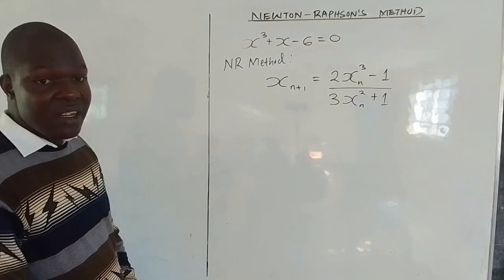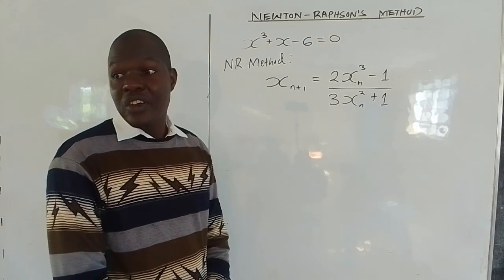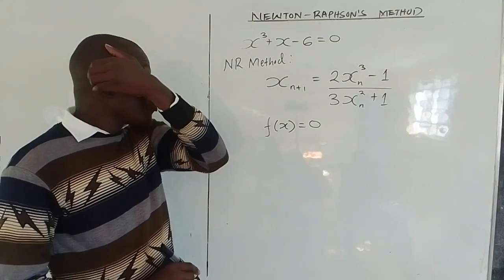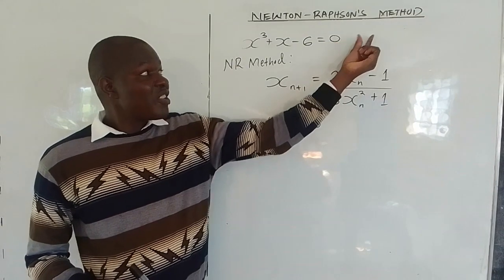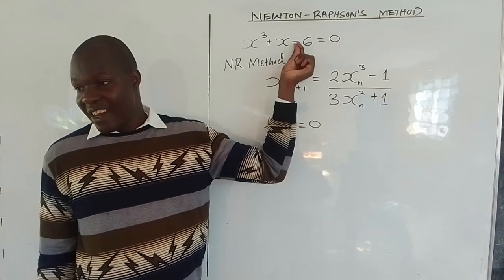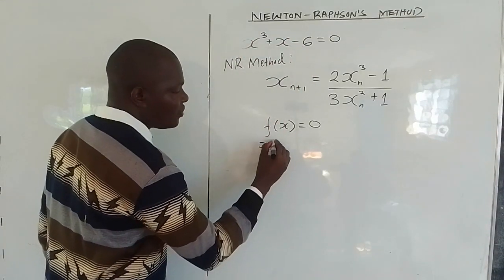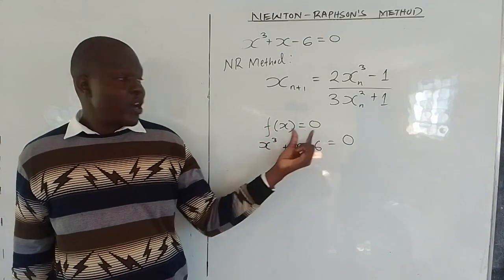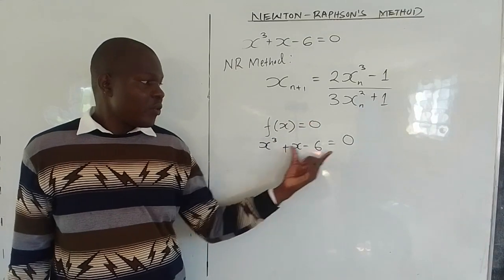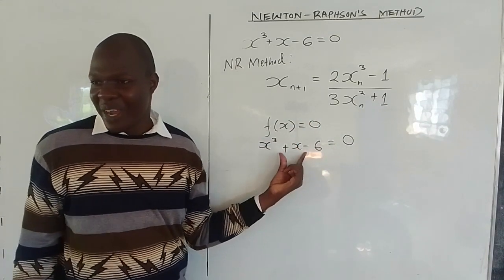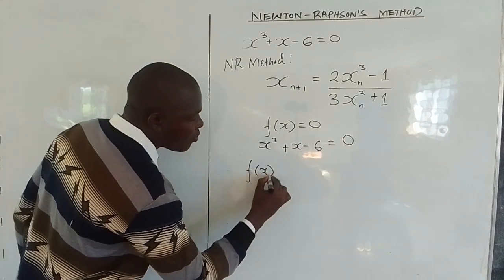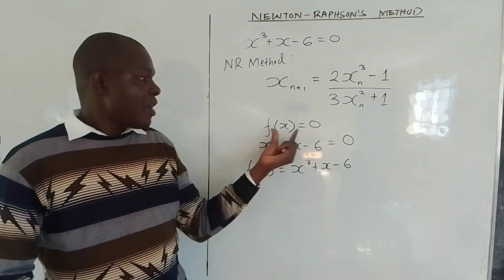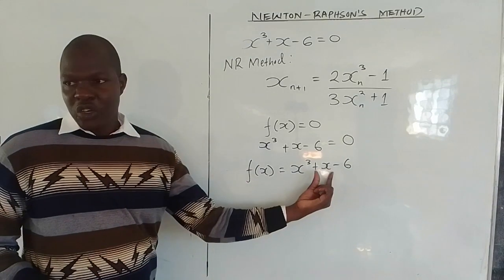They're trying to tell you to derive that. The root of an equation is a point where the solution of the equation exists. At the root of the equation, the function f(x) is equal to 0. So the equation must be equated to 0 — anything on the right side must be brought to the left hand side. The equation we have is x³ + x - 6 = 0, so f(x) = x³ + x - 6.